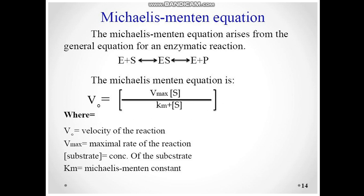The Michaelis-Menten equation is: V = (Vmax × [S]) / (Km + [S]), where Vmax is the maximal rate of reaction, S is the substrate concentration, and Km is the Michaelis-Menten constant. Vmax represents the maximum velocity of the reaction.